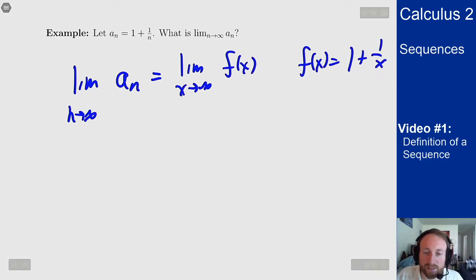I know what happens here as x goes to infinity: that 1 over x goes to 0 and I'm left with 1, which means this limit here must also be 1.